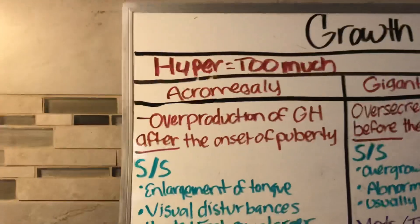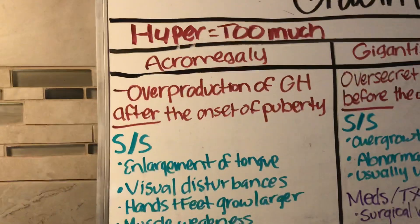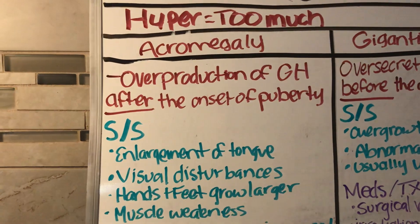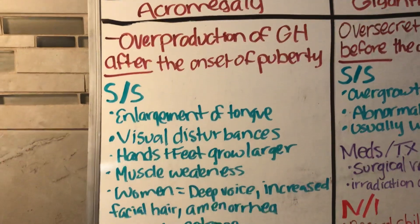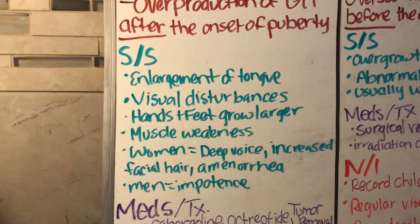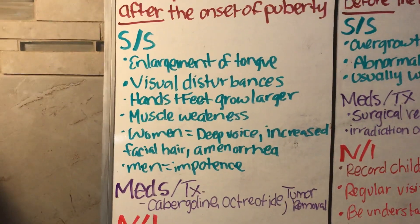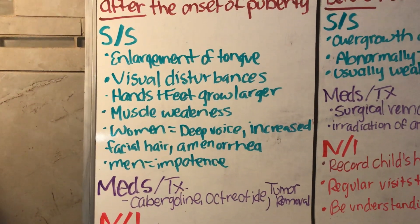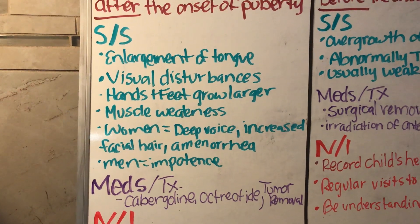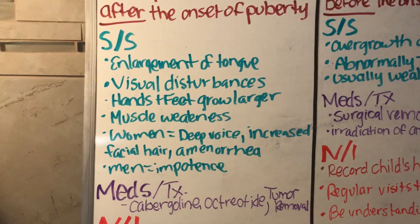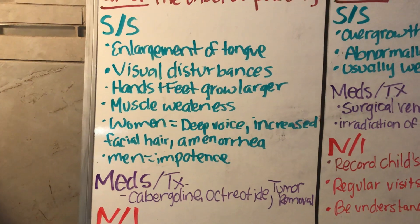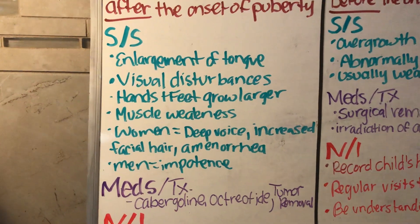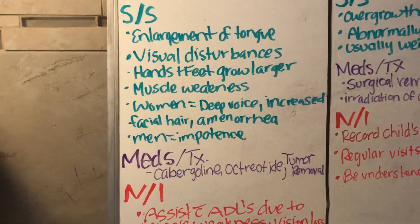Let's start with acromegaly. This is the overproduction of GH after the onset of puberty. Signs and symptoms include enlargement of the tongue, visual disturbances, hands and feet grow larger, and muscle weakness. In women they're going to have a deep voice, increased facial hair, and amenorrhea, which is lack of menstruation. In men they can become impotent.